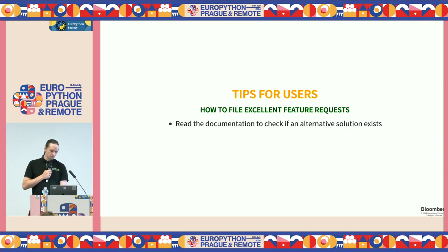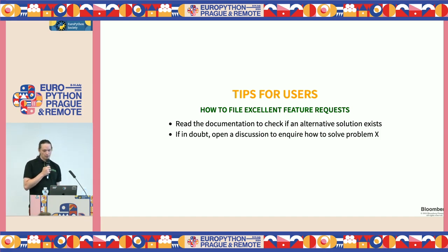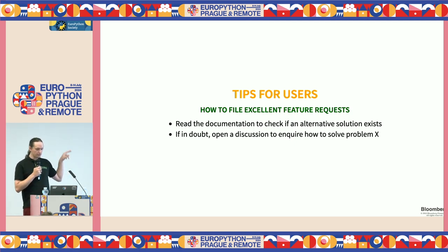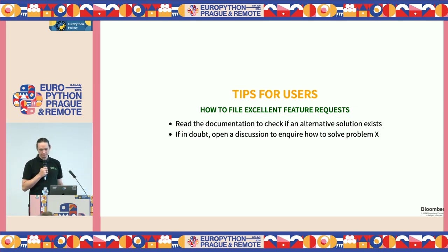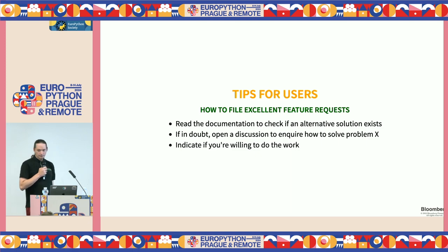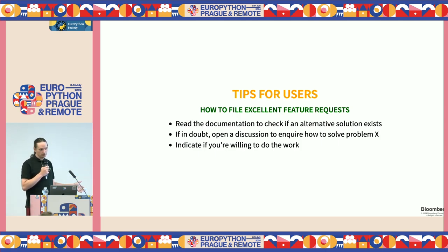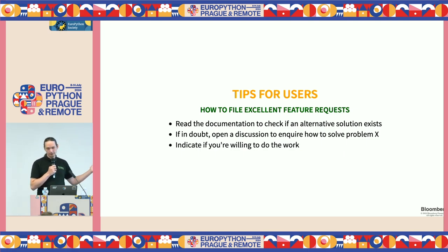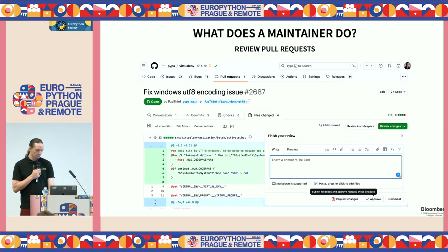When filing feature requests as a user: first, read the documentation — maybe it's already there. Second, if in doubt, open a discussion first. GitHub has a great discussions feature where you can informally discuss whether an idea is good, how to fix it, or whether there's already a workaround. Finally, always indicate if you're willing to do the work. If you want a great feature but aren't willing to implement it, I'm more likely to say no. If I'd have to spend a week doing it alone, the answer is probably not. If you're willing to do the work, things are much more likely to move forward.